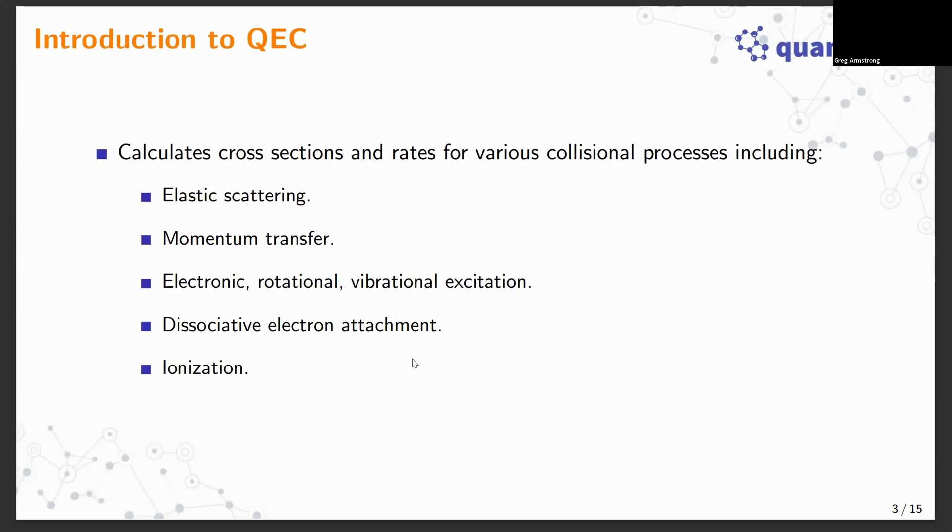What does QEC ultimately do? It calculates cross sections and rates for a variety of electron impact collision processes including elastic scattering and momentum transfer, excitation processes including electronic, rotational, vibrational excitation. It also provides estimates for dissociative electron attachment cross sections and the binary encounter Bethe method is implemented for calculating electron impact ionization cross sections.